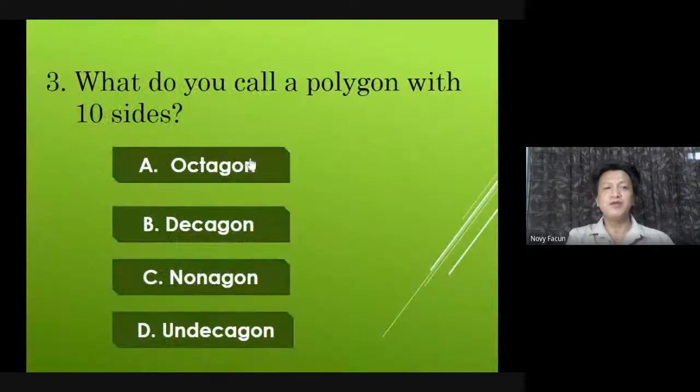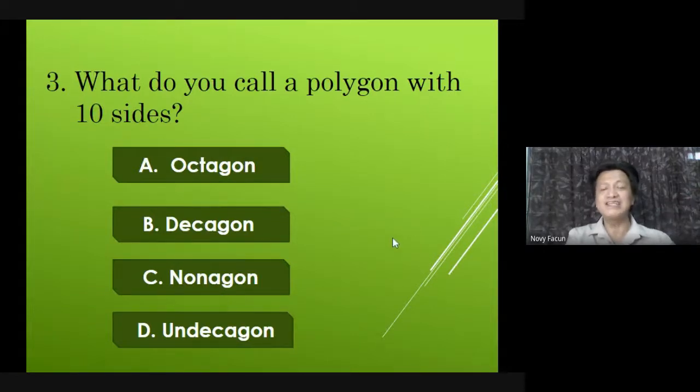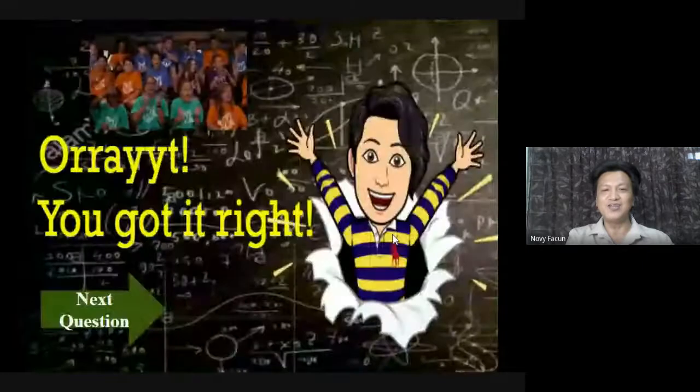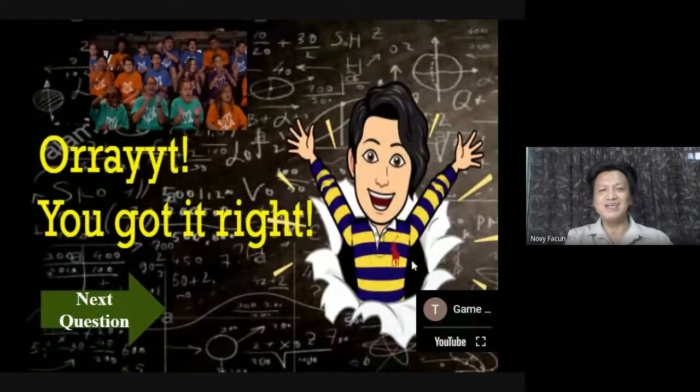Number three: What do you call a polygon with 10 sides? Yes, Mark — that is correct, letter B, decagon. You got it right.